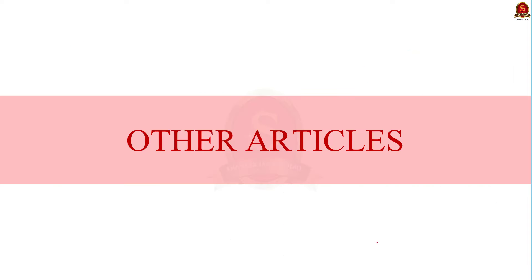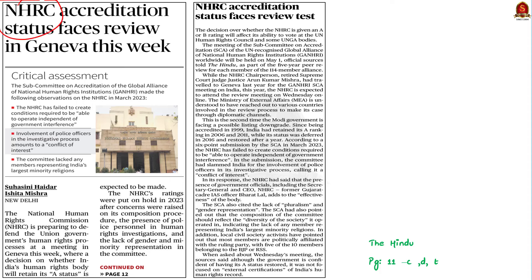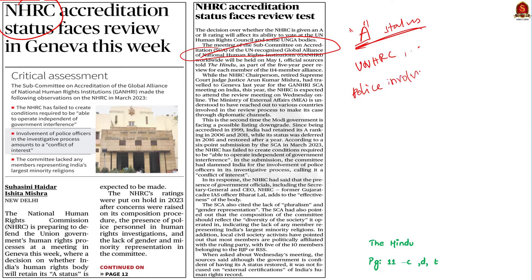The National Human Rights Commission is currently under scrutiny for its accreditation status. A meeting in Geneva will determine if the NHRC can maintain its A-status, which affects its ability to participate fully in the United Nations Human Rights Council and other international bodies. The review focuses on concerns about the commission's independence, including issues like involvement of police in its investigations and lack of diverse representation. While the Indian government is making diplomatic efforts to retain the A-status, various international human rights groups are advocating for a downgrade, citing India's declining human rights record and interference in the commission's operations.